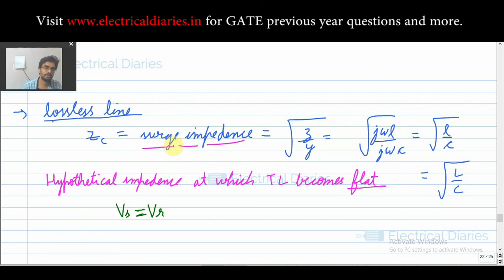This helps you in easy calculations while analyzing the various possibilities of designing the transmission line. What you should remember from this discussion is this formula and you should know the meaning of what exactly surge impedance is. It is a hypothetical impedance at which the transmission line becomes flat. This is enough for characteristic impedance and surge impedance, and in some other video we will see surge impedance loading.